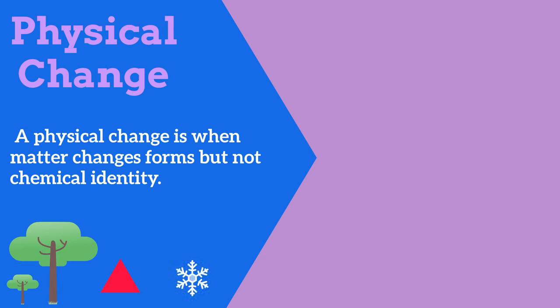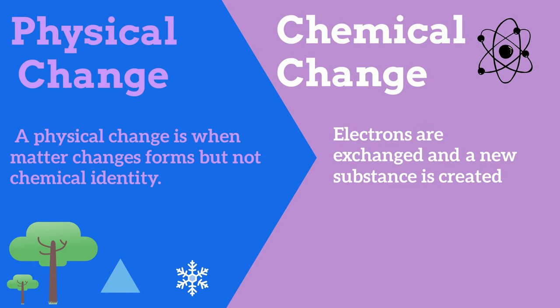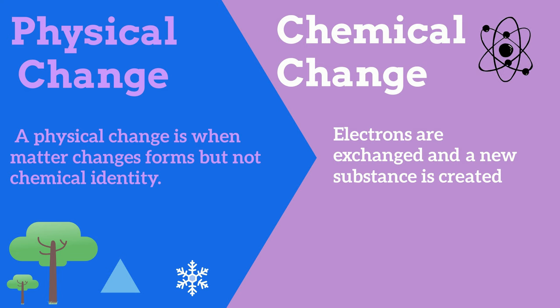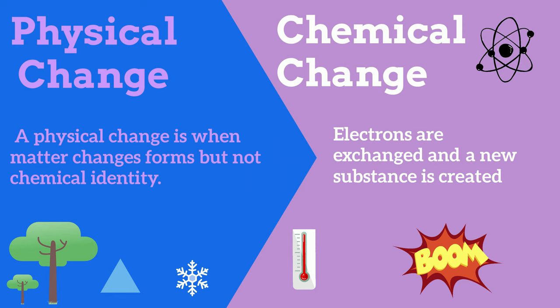A chemical change involves electrons being exchanged and a new substance is created. Most likely you will see an indicator such as a change in temperature or an explosion. Let's take a look at some examples and see if it's a physical or chemical change.